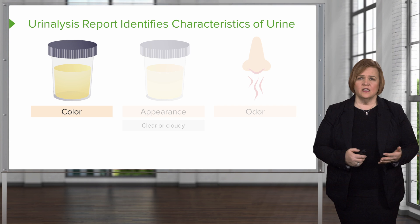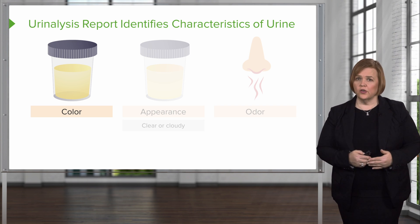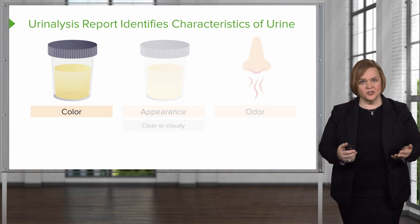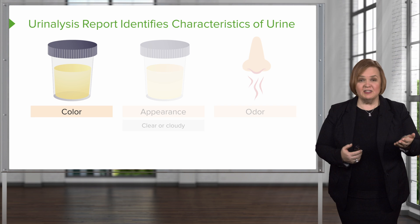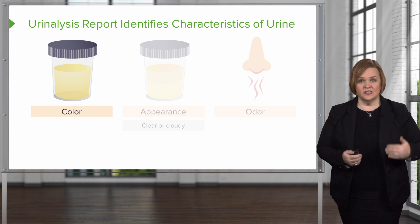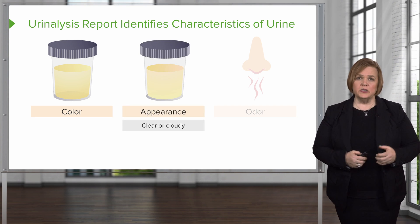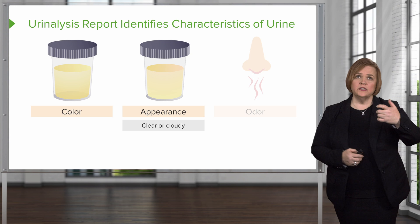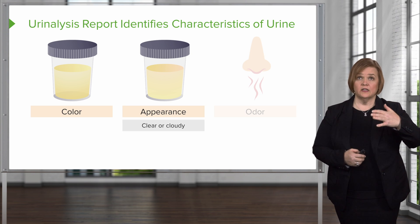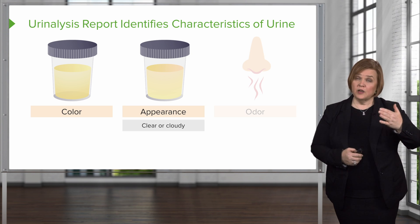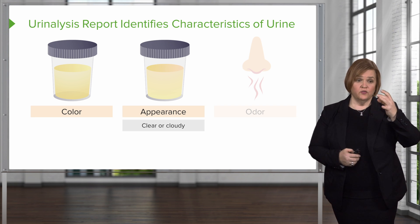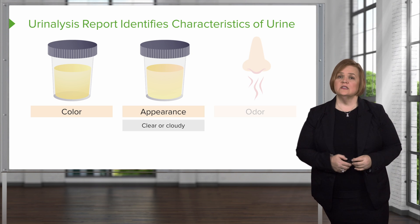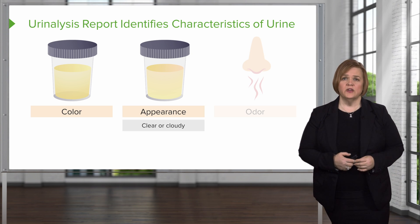The urinalysis looks at color first of all. They'll actually look at the urine sample and identify the type of color. They'll look at the appearance — hold it up and see, is it clear or is it cloudy? Urine without problems should be clear. If there's a floating, hazy, milky substance in it, that's considered cloudy and is usually a sign of some type of infection.